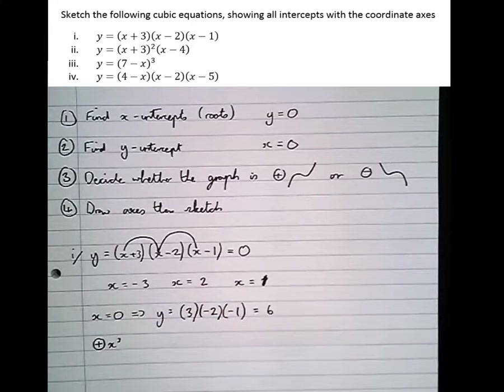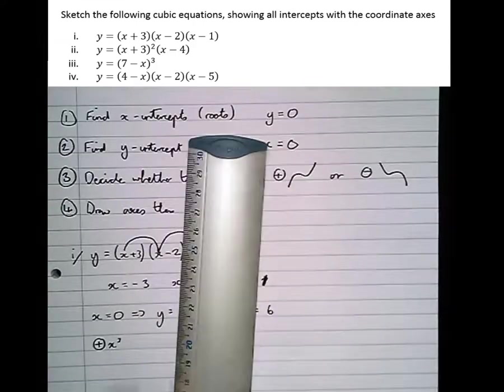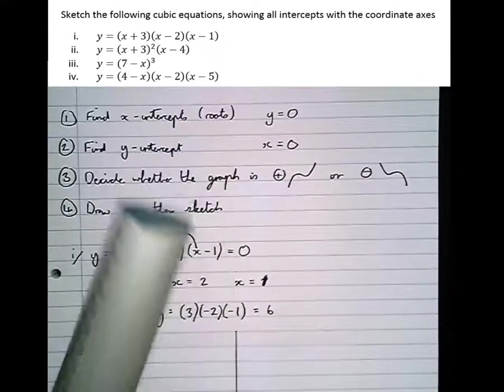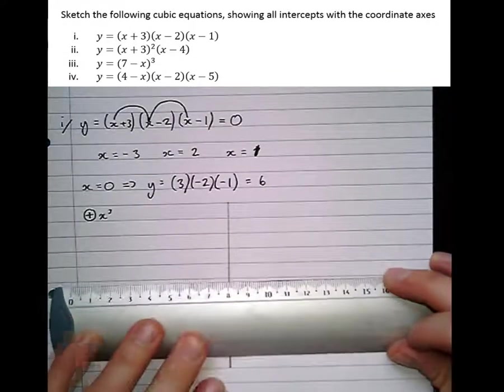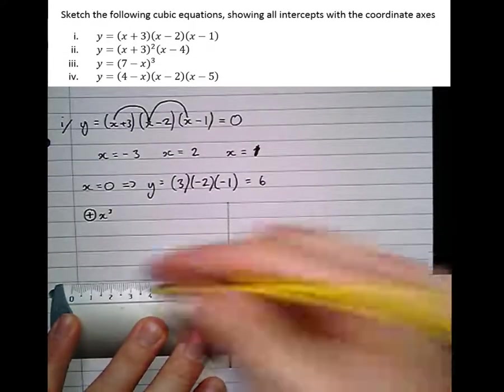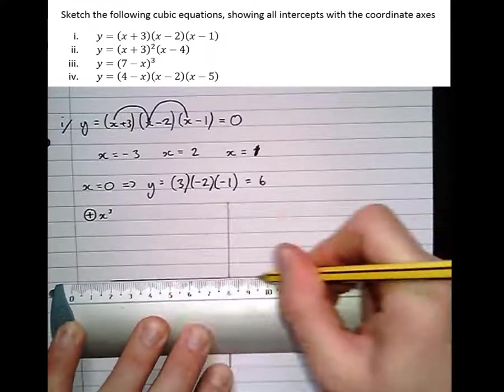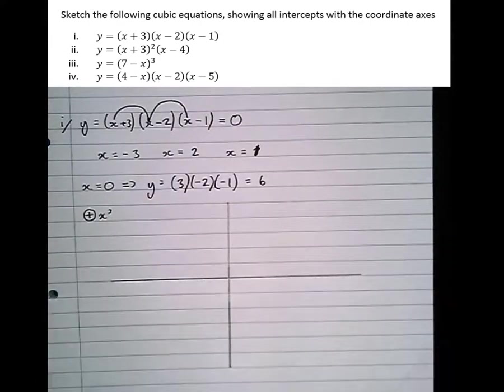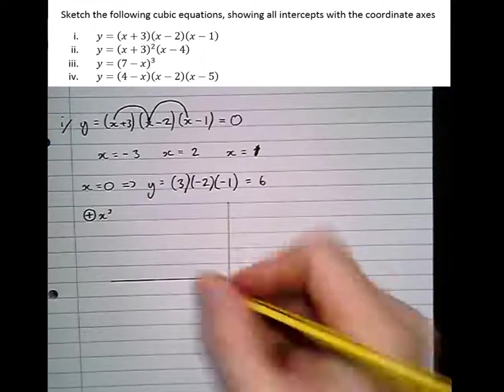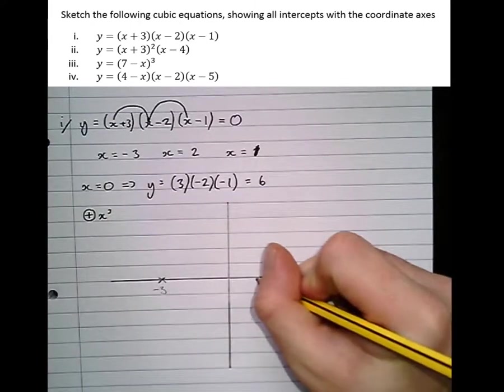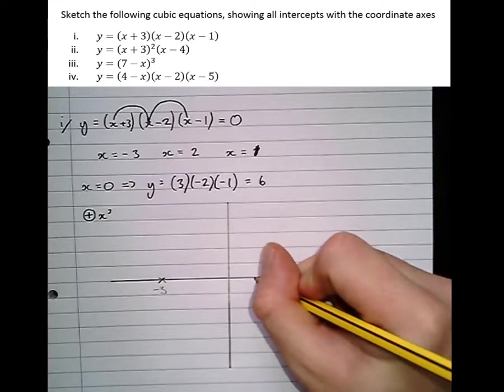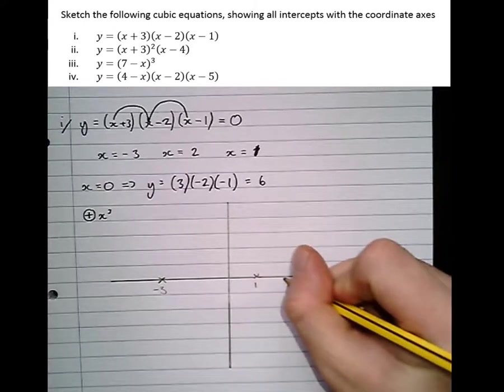So we've got all that information now, now it's just left to draw it. So notice I'm using a ruler and pencil. And that way, if I make any mistakes with my cubic, then I can just rub it out and have a better attempt. So the x-intercept is at minus three, then there's one and two.